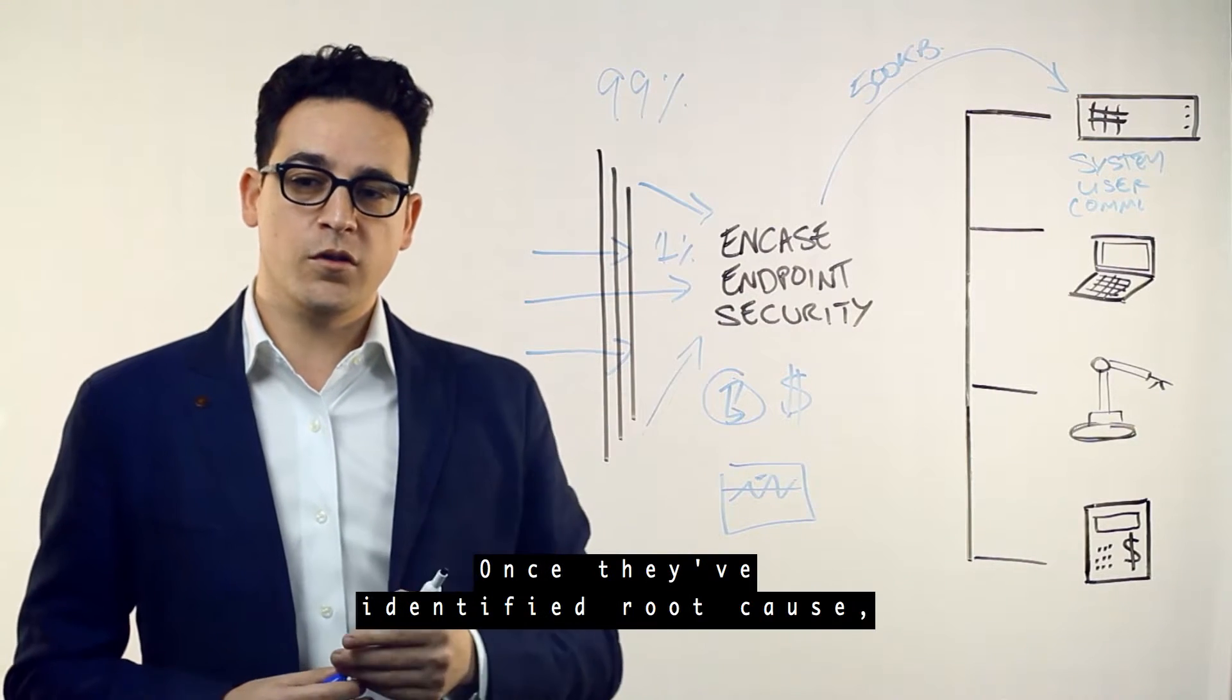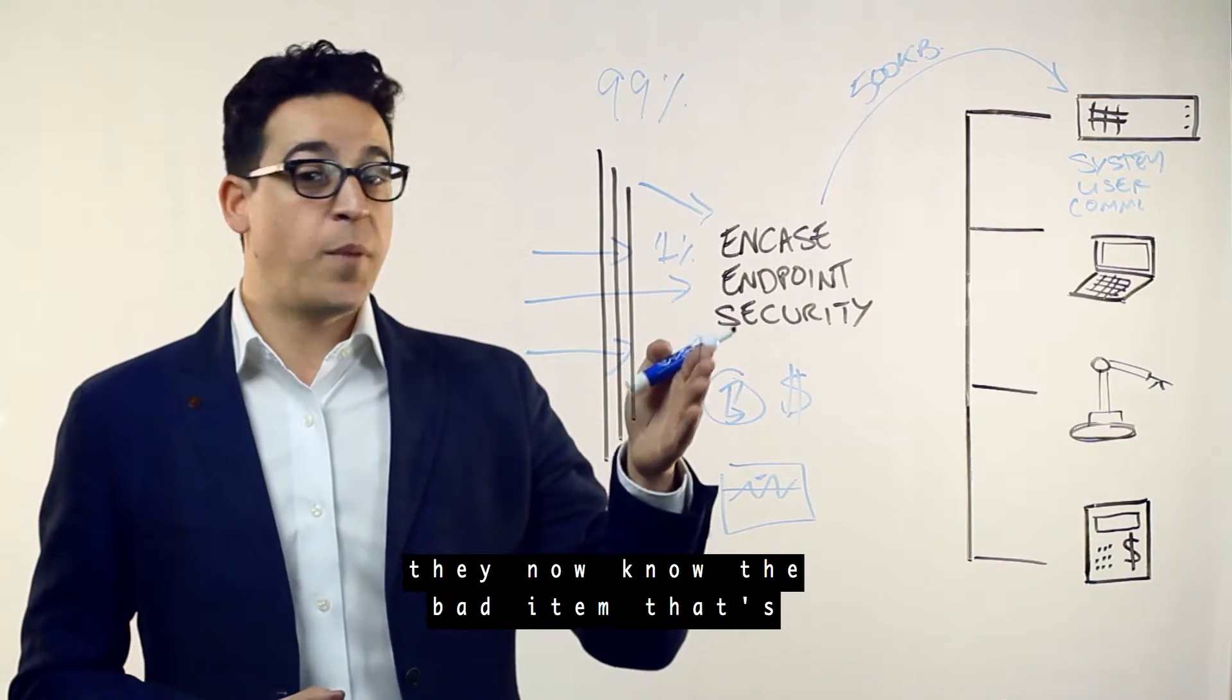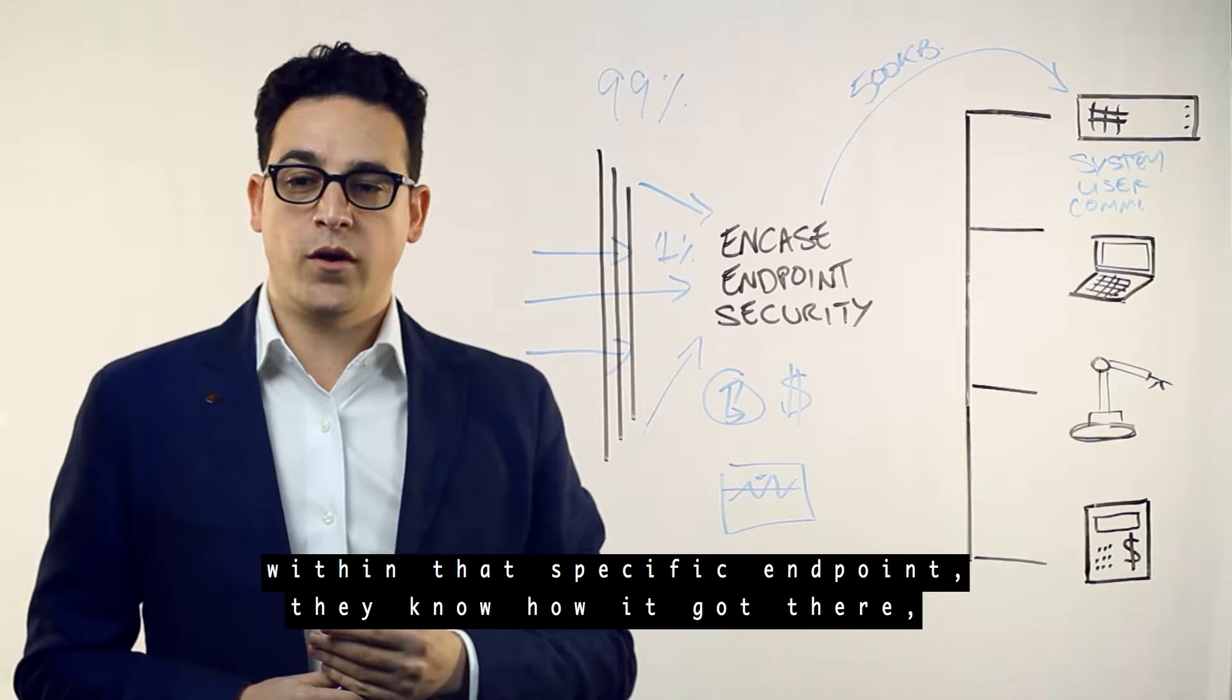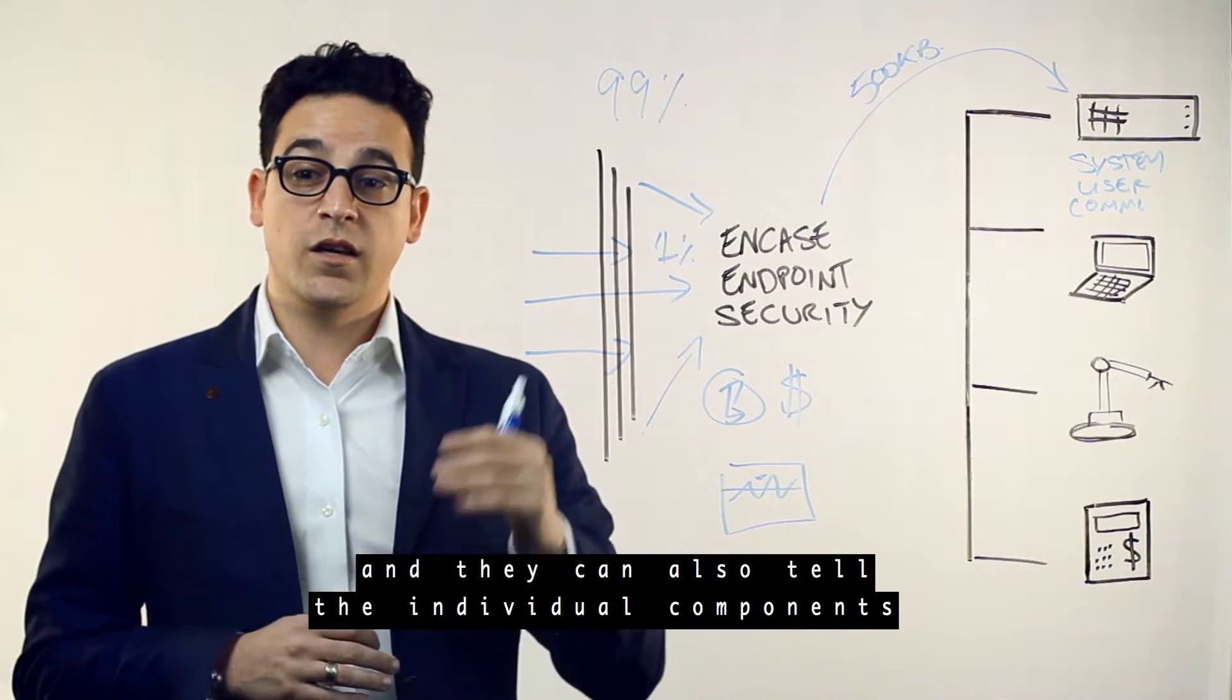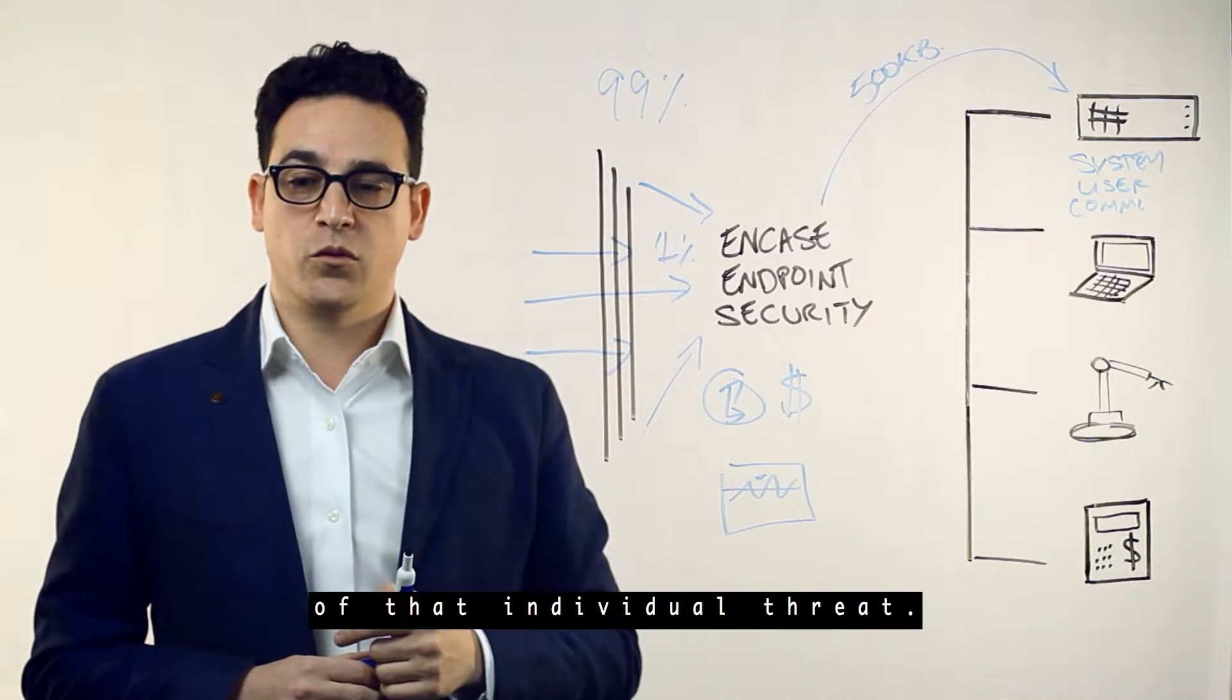Once they've identified root cause, they now know the bad item that's within that specific endpoint, they know how it got there, and they can also tell the individual components of that individual threat.